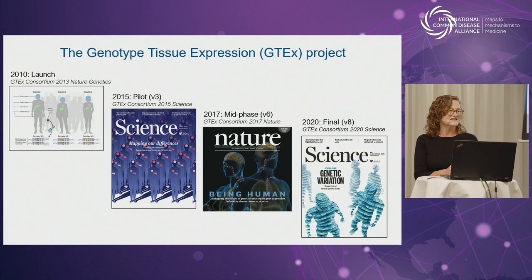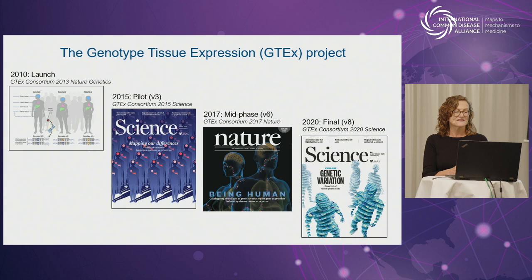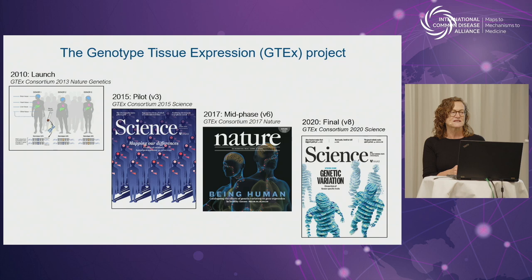I'm going to talk about a couple of tissue-based reference projects. The first one, obviously, is the GTEx, or Genotype Tissue Expression Project, that I've been engaged with since the start. Essentially, this project was launched in 2010, and this shows the rough timeline through its publications to its final consortium publication, which was based on the V8 data and came out in 2020. We have actually had a release that included additional genotypes just this last year, and there are a few more sets of data still straggling out.